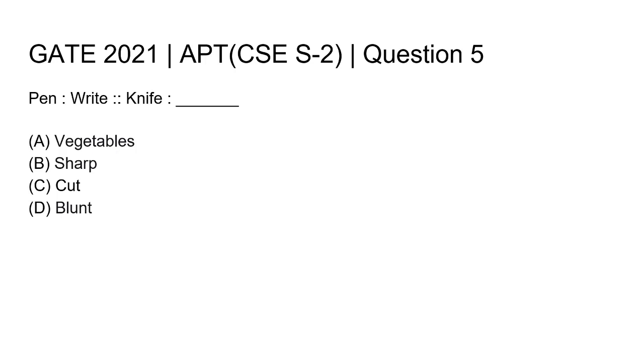The options are: option A, vegetables; option B, sharp; option C, cut; and option D, blunt.